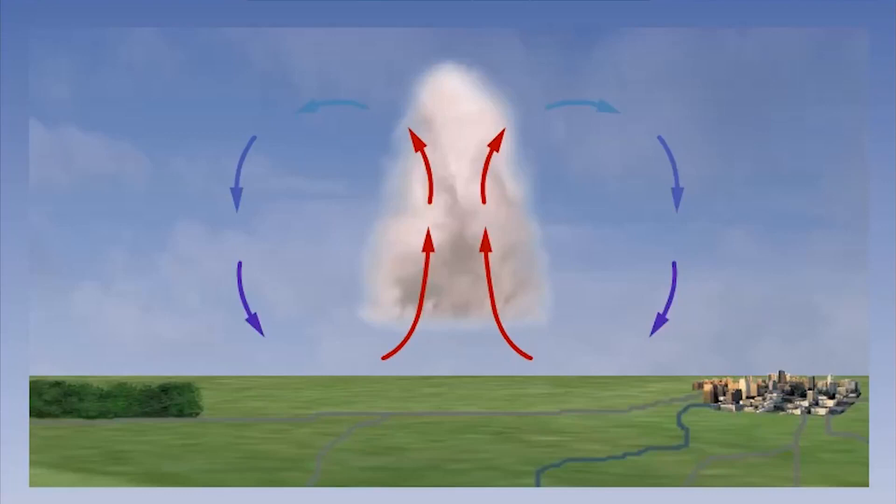If we now consider the bigger picture, we can identify downdrafts at quite some distance from the cloud. These currents can also cause turbulence. And again, very large cloud development like cumulonimbus must be treated with extra caution.